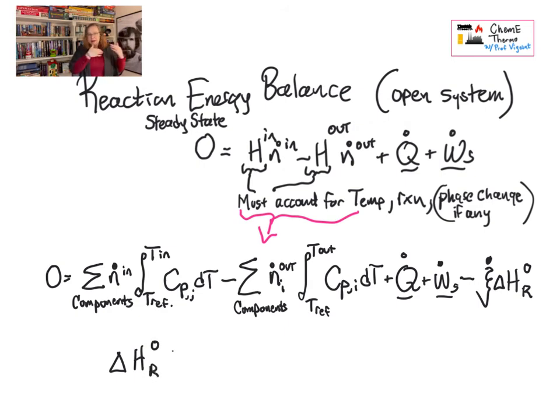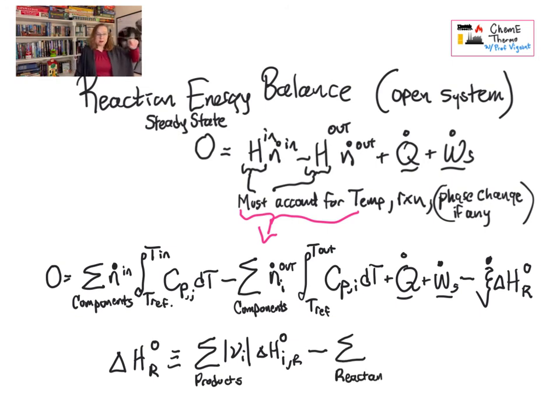Remember, this ξ is ξ_dot because things may be flowing. So it's moles per hour, for example. Delta H for the reaction is a thing that's tabulated in the back of your book, lots of places you can look it up, usually at 25 degrees C. It can be at other temperatures, so pay attention. And it's products minus reactants. So it's the delta H that you've looked up for that particular component times its stoichiometric number, all summed up for all of the products, and then minus stoichiometric number times delta H that you've looked up for that component, all summed up. Products minus reactants.